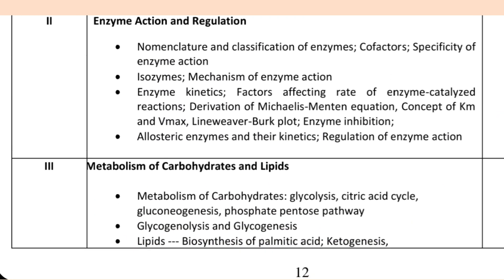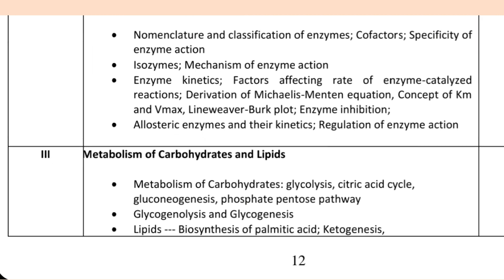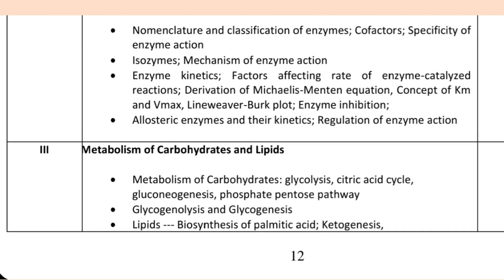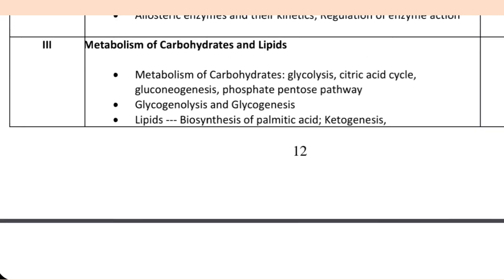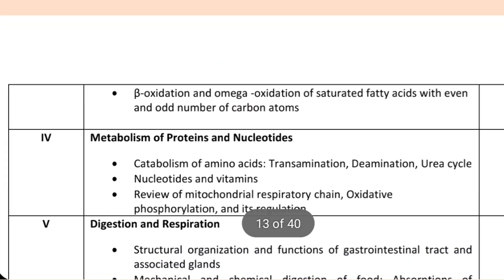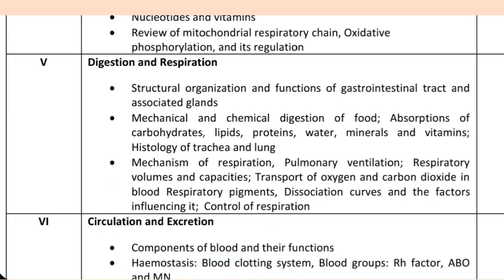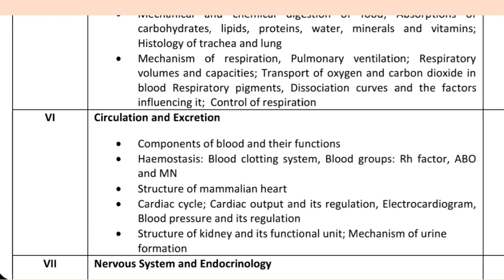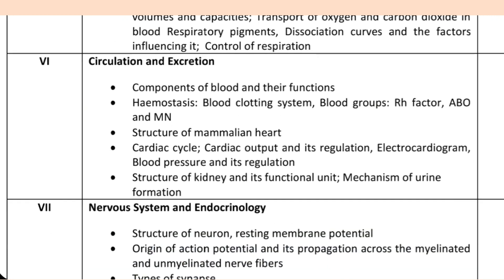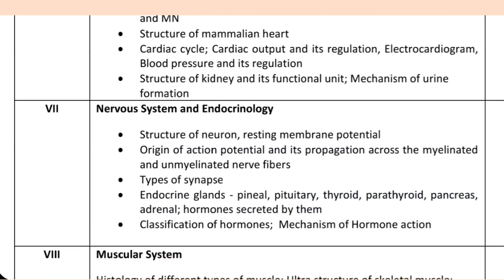The third unit is Metabolism of Carbohydrates and Lipids, the fourth unit is Metabolism of Proteins and Nucleotides, the fifth unit is Digestion and Respiration, the sixth unit is Circulation and Excretion, and the seventh unit is Nervous System and Endocrinology.